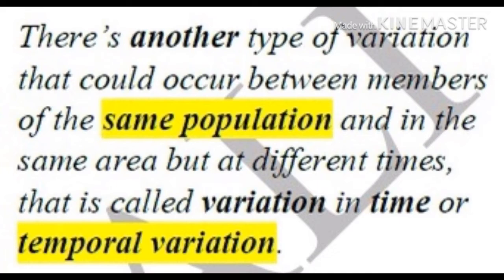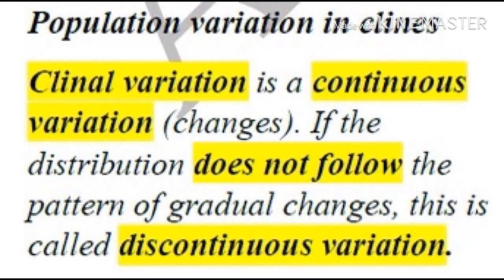Population variation in clines — clinal variation is a continuous variation because the higher we go in altitude, the shorter the plant, and this can occur for many organisms. It does not only refer to plants. Many changes can occur depending on the temperature, depending on the altitude, etc.